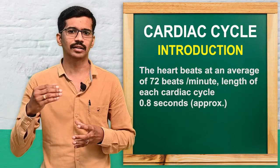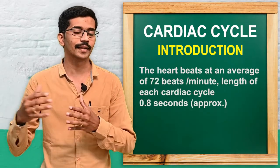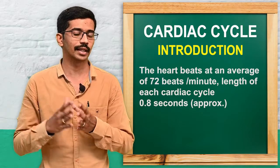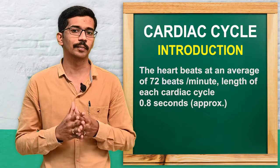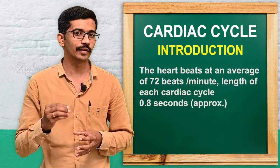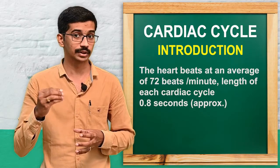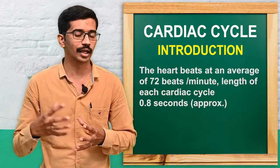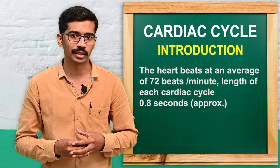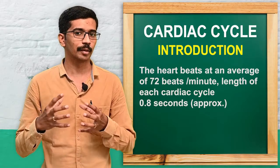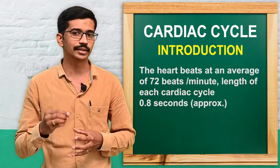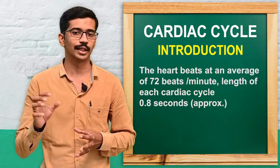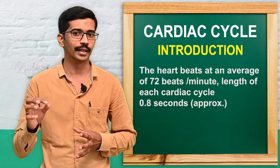Coming to the events of cardiac cycle — during each heartbeat, we have to see the length of the cardiac cycle initially. If our heart beats at an average of 72 beats per minute, then the approximate length of each cardiac cycle will be 0.8 seconds.